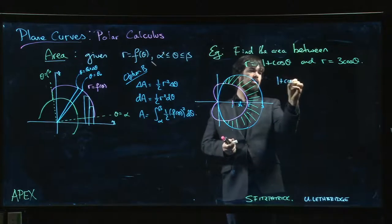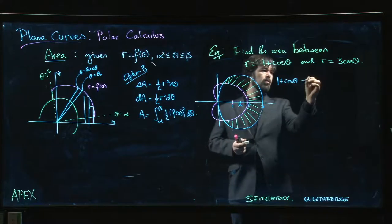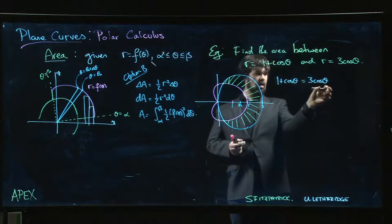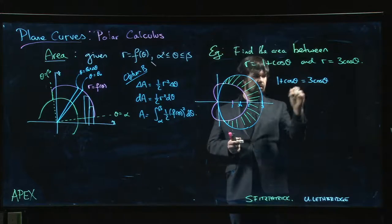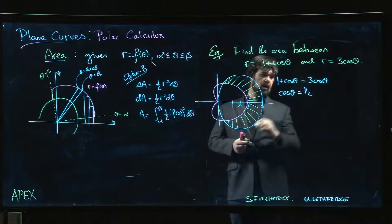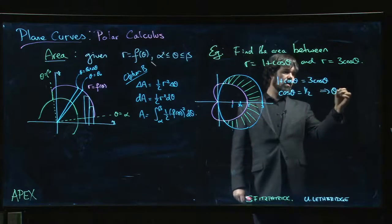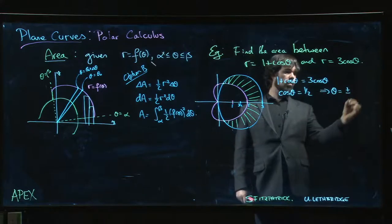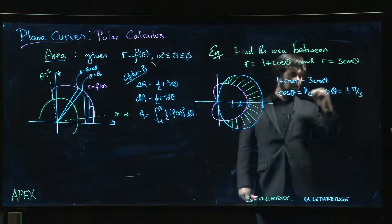So what we do is we equate the two. One plus cos theta equals three cos theta. So subtract cos theta from both sides. One equals two cos theta. Divide by two, cos theta is one half.